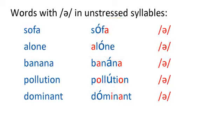Let's practice some words with schwa in unstressed syllables. Be sure to make the unstressed syllables weak. Sofa. Alone. Banana. Pollution. Dominant.